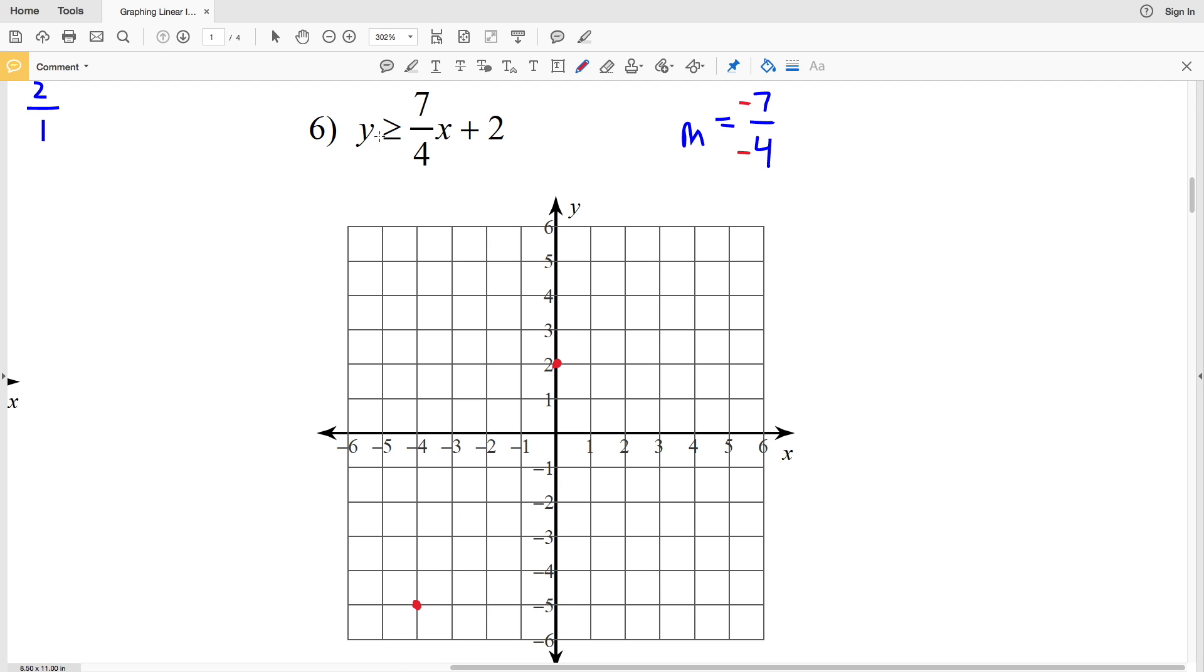Now we're going to draw a line and connect, and this is indeed a solid line, meaning that the values on the line are true for the inequality since y is greater than or equal to 7/4 times x plus 2. Now we're going to pick a test point.